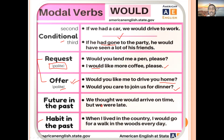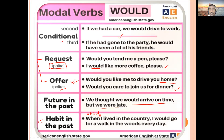Would is also used for future in the past — expressing something expected to happen but which did not: 'We thought we would arrive on time, but we were late.' We expected to reach in time, but we did not. Would is also used for past habits — something you used to do. You can replace 'would' with 'used to': 'When I lived in the country, I would go for a walk in the woods every day.'